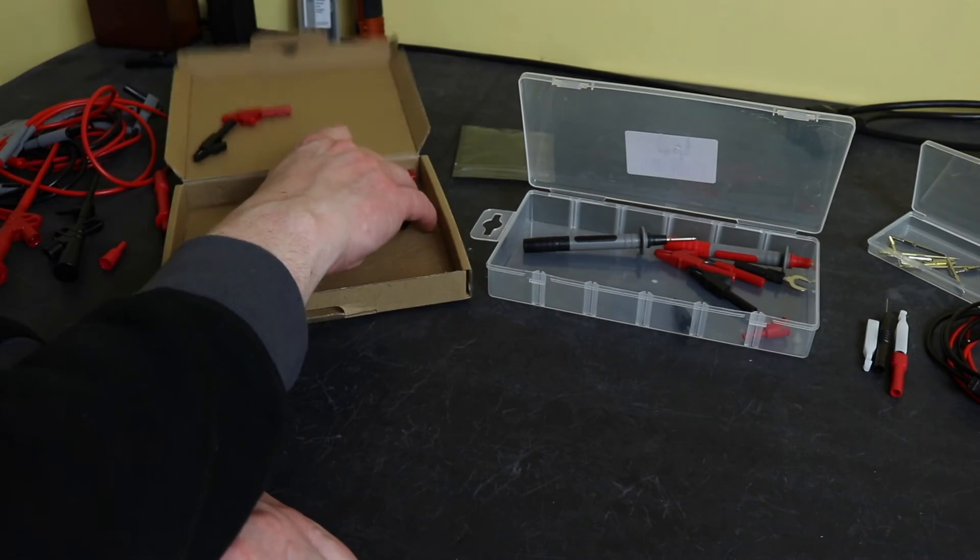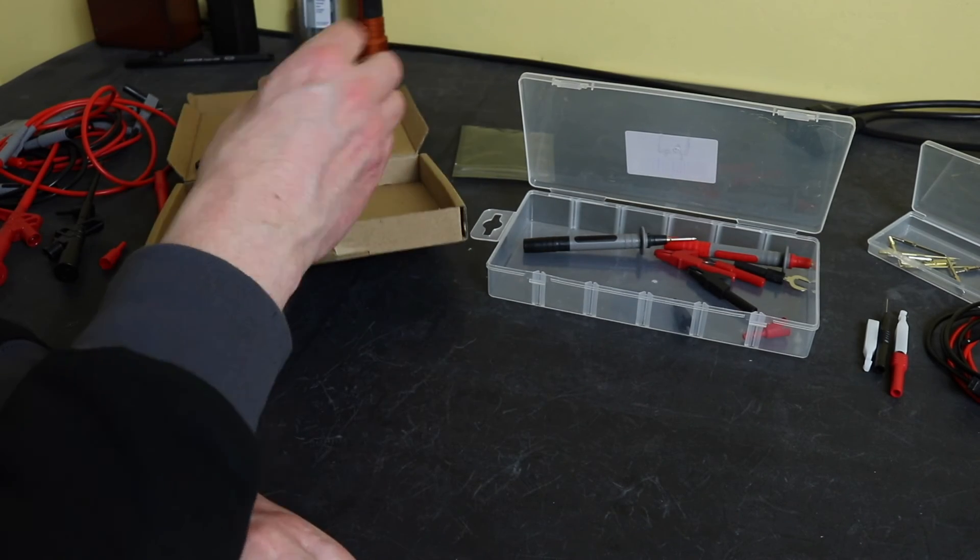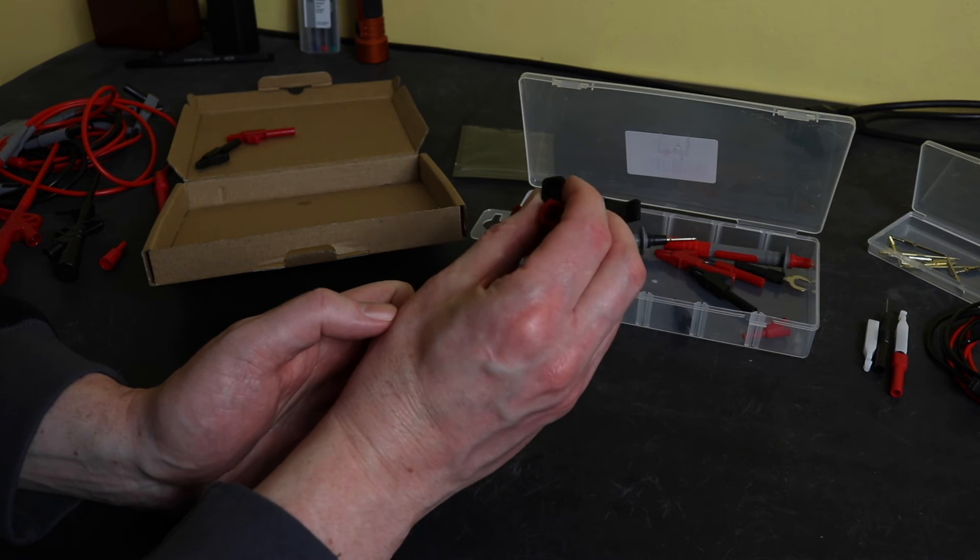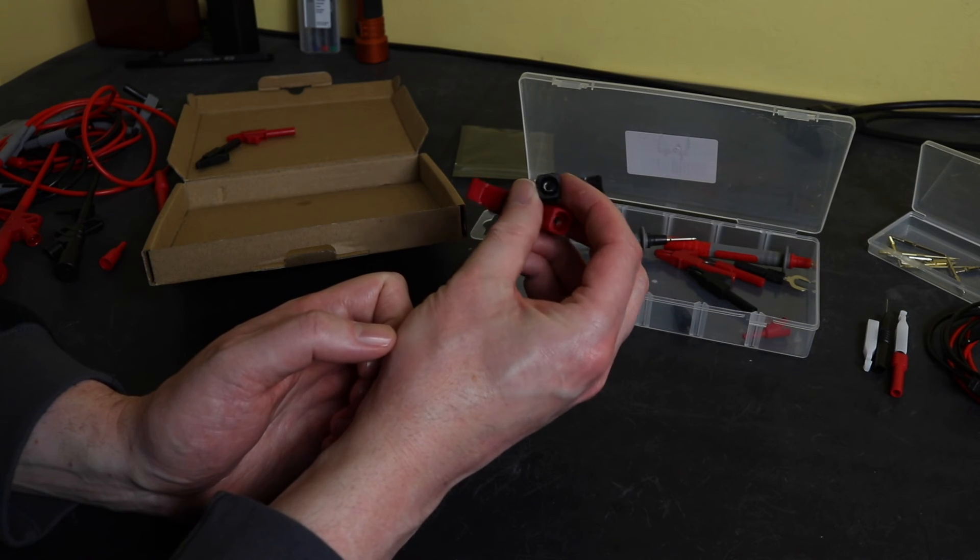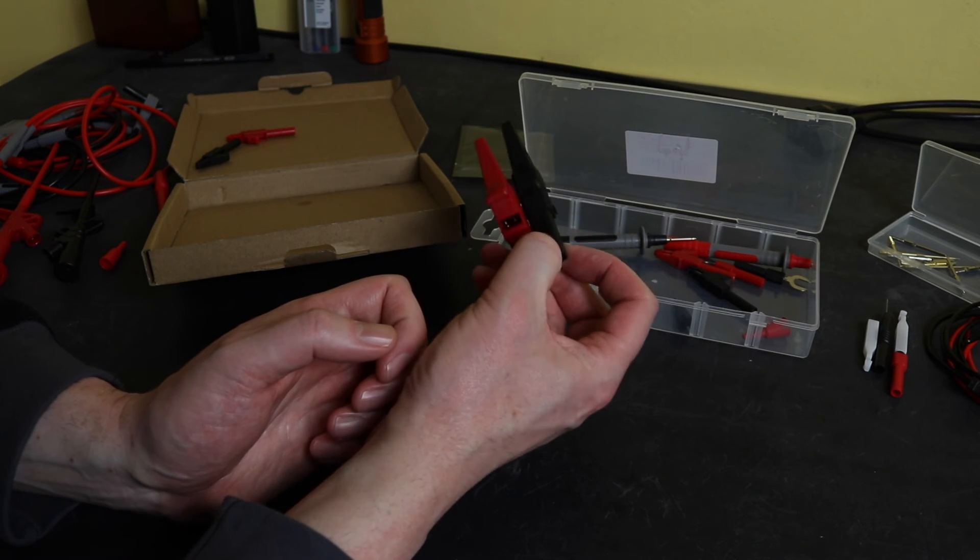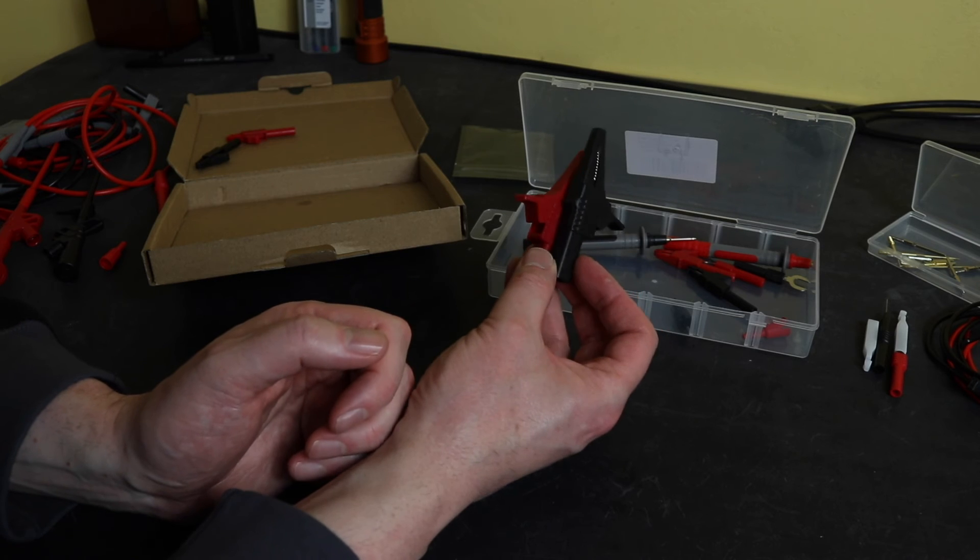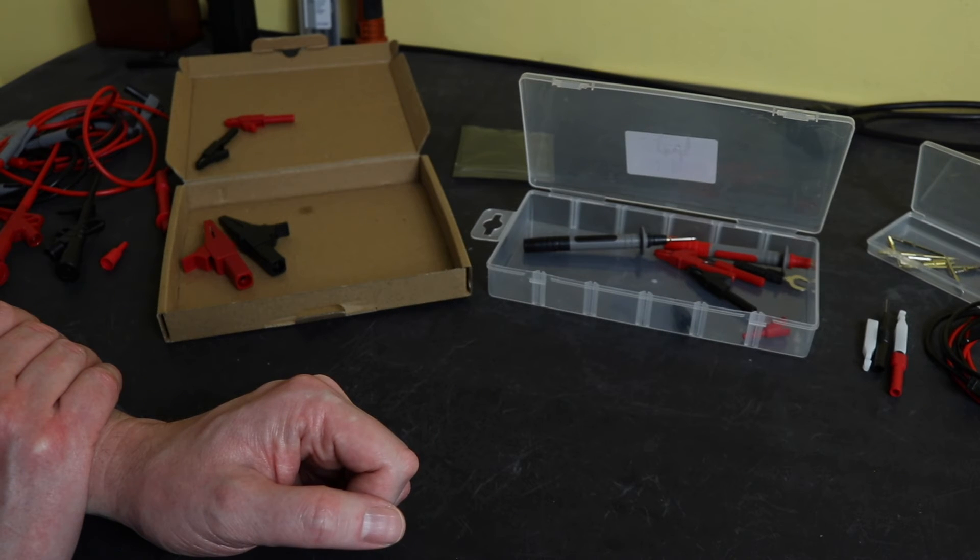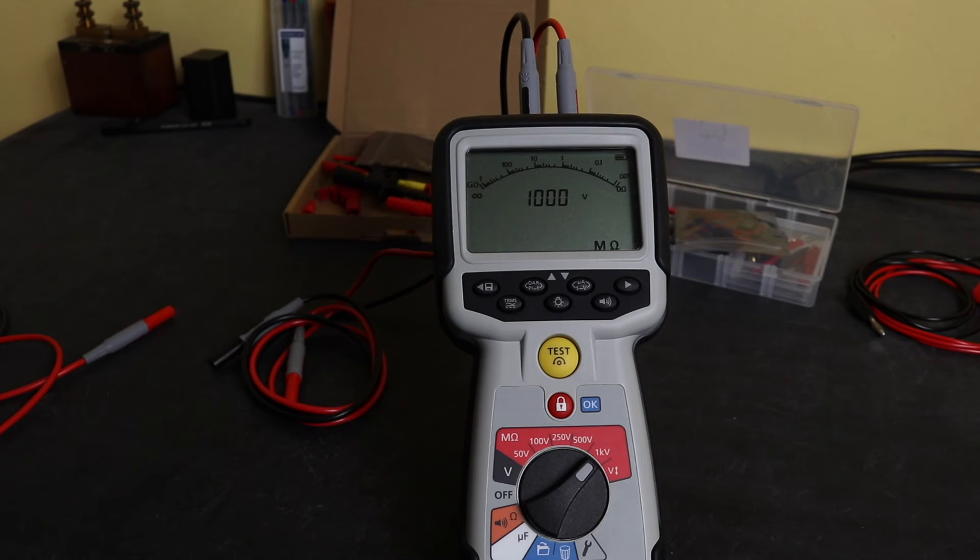The final element is just the larger croc clips that come with the set from Prostor. Again, standard four millimeter accessory that will plug straight onto the cable. That's where you have it. I'll grab hold of the insulation tester and see what kind of insulation resistance value we get.